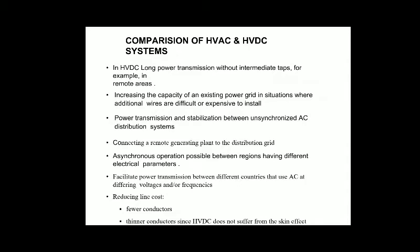Connecting a remote generating plant to the distribution grid is easier with a DC, especially HVDC, transmission line. Asynchronous operation is possible between regions having different electrical parameters. HVDC facilitates power transmission between different countries that use AC at different voltages or frequencies. It also reduces line cost with fewer and thinner conductors, since HVDC does not suffer from the skin effect.